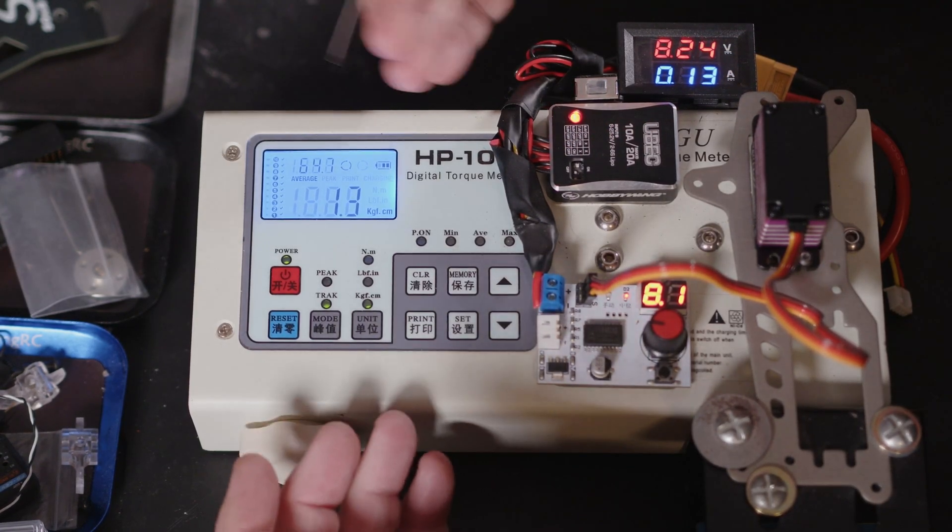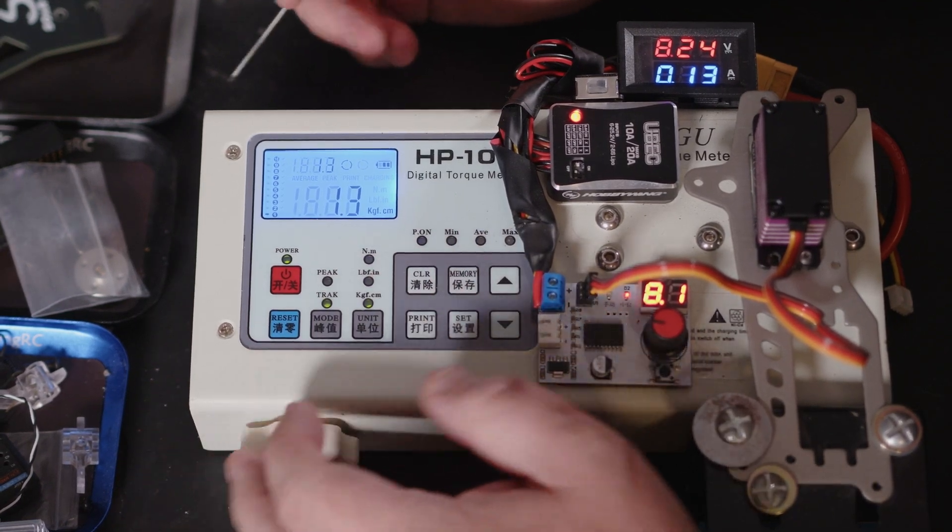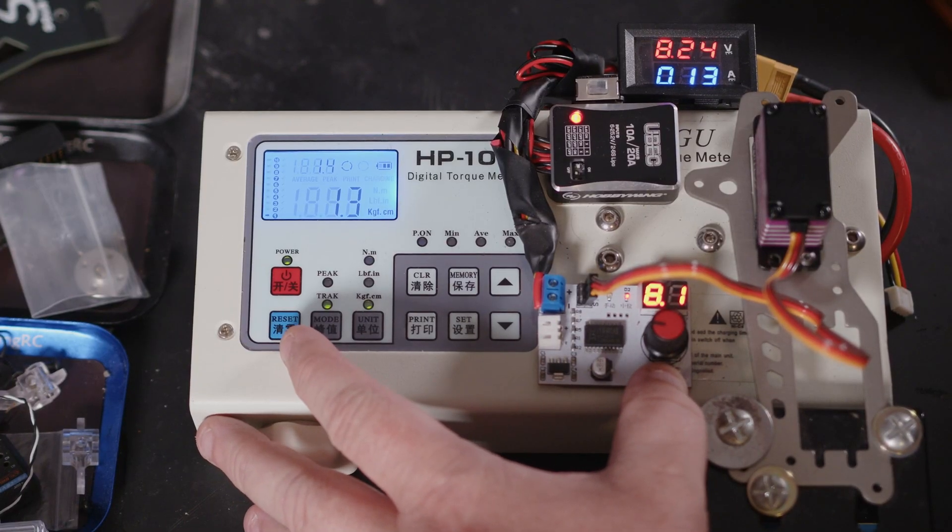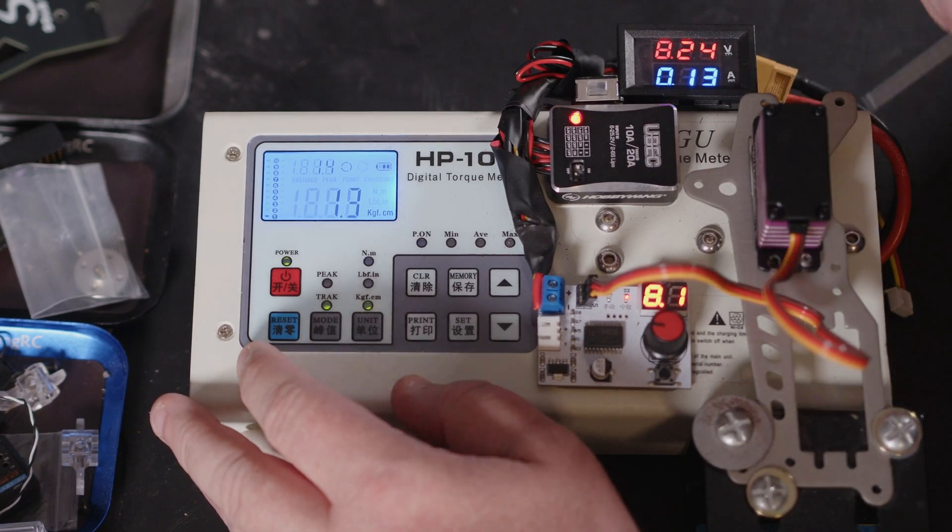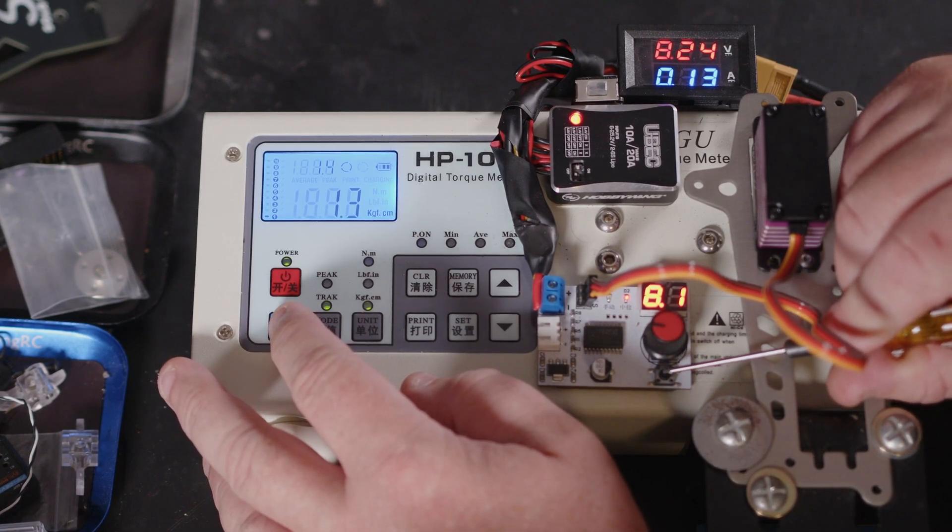At this point is where I start asking myself, would you actually notice on an RC when you start getting much above this sort of 60 kilogram mark? You're kind of quite high up here anyway. But let's give it a try at 8.24 volts.